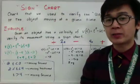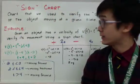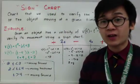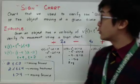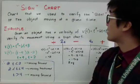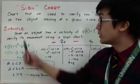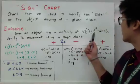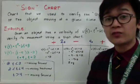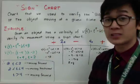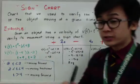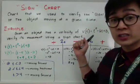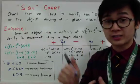It's important in application of derivatives that you know how to use your sign chart. A sign chart is the chart we use to verify the sign of an object moving at a given time. In this example, we are given the velocity function t² - 6t + 8. We need to verify the movement using the sign chart. You should know what function is given — position, velocity, or acceleration — so you know how to process your work.